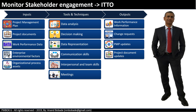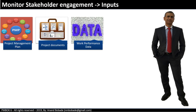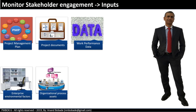Let's look at the inputs, tools and techniques, and outputs. The inputs are: project management plan, project documents, work performance data, enterprise environmental factors, and organizational process assets.